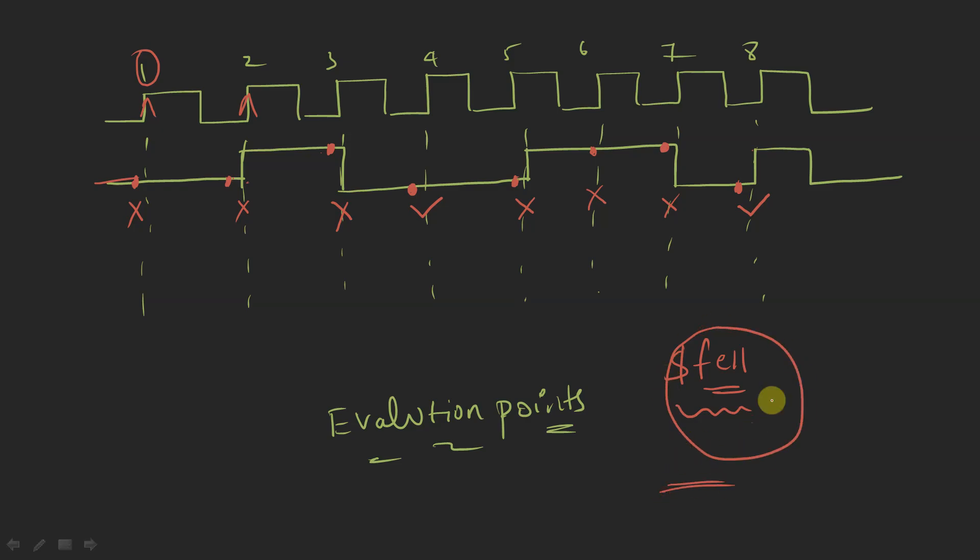That is how you check whether an assertion is passing or failing when using the `$fell` system function. If you like this video, please like, share, and subscribe to my YouTube channel. Thank you.